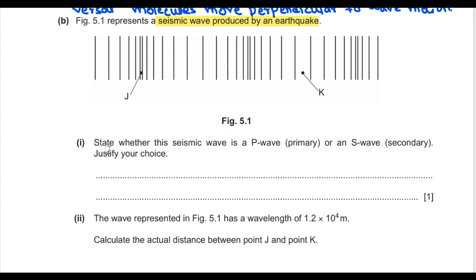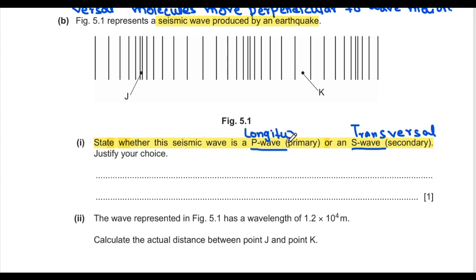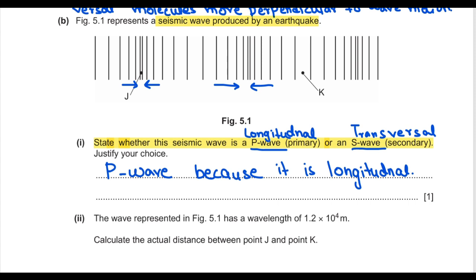Part B: figure 5.1 represents a seismic wave produced by an earthquake. State whether the seismic wave is a P-wave or S-wave and justify your choice. P-waves are longitudinal and S-waves are transverse. The wave shown has compressions and rarefactions, so it is a longitudinal wave — therefore it is a P-wave.